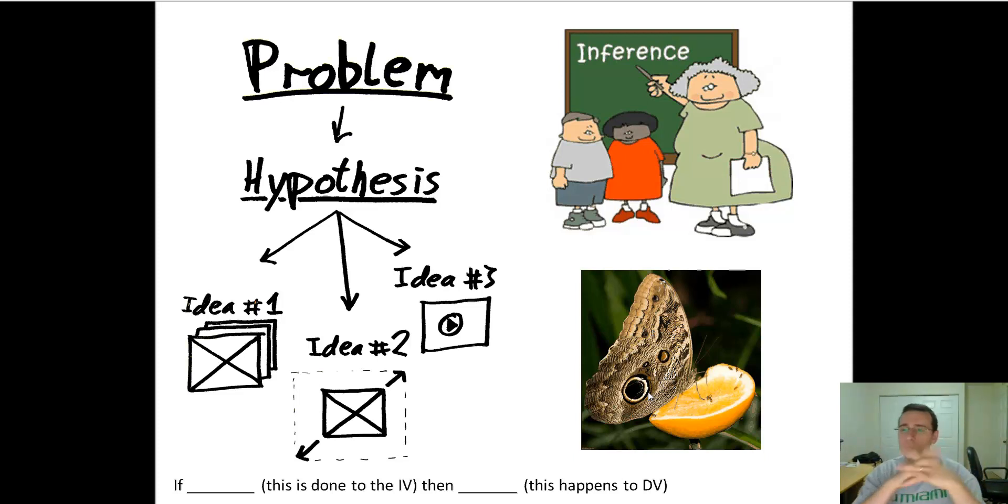So, but the cool thing about hypothesis is that even when they're not supported, even when the hypothesis is the data, like you do the experiment and you end up figuring out that your idea was absolutely incorrect, you will still have led you to have done more investigation and then find, it's one step closer you got to the truth. So, even when you do a hypothesis that ends up not being true, it's okay because you ended up getting closer to the truth.